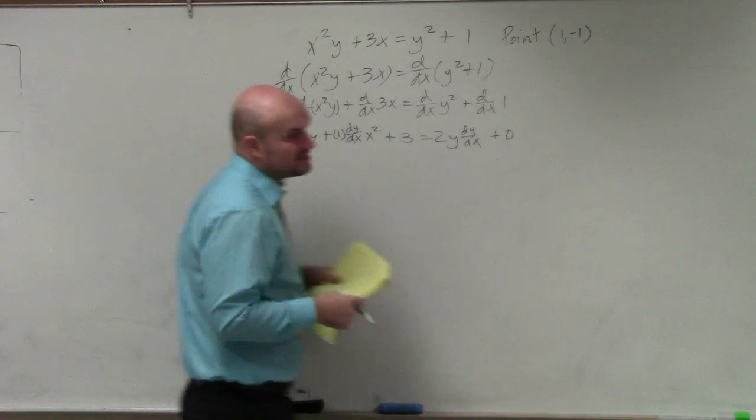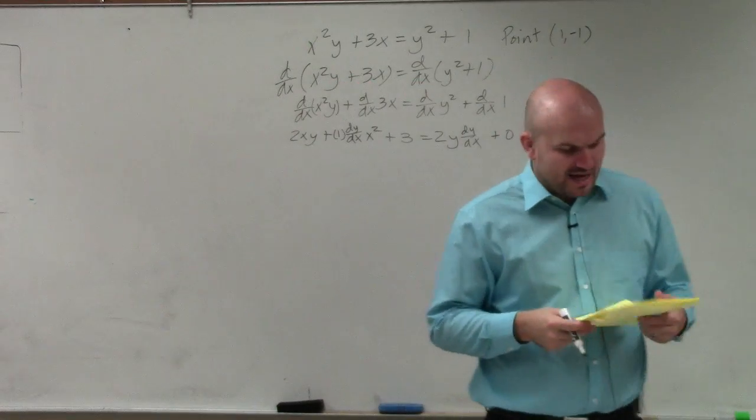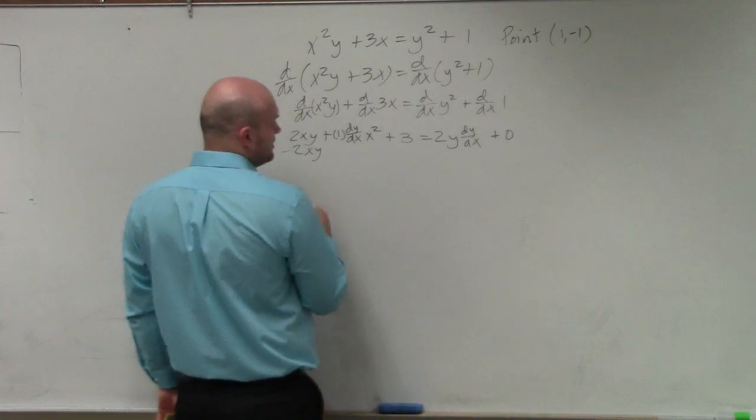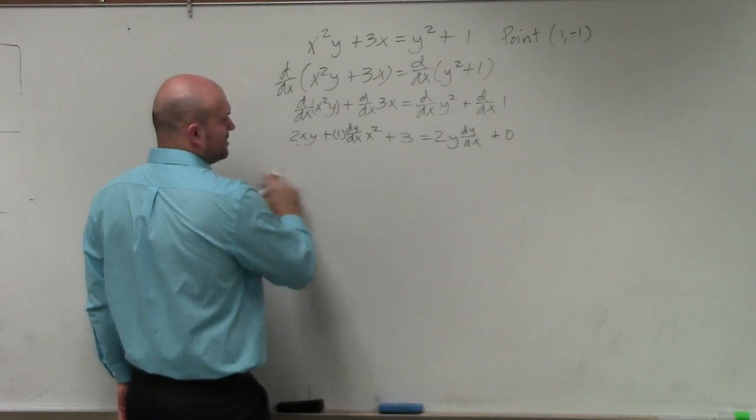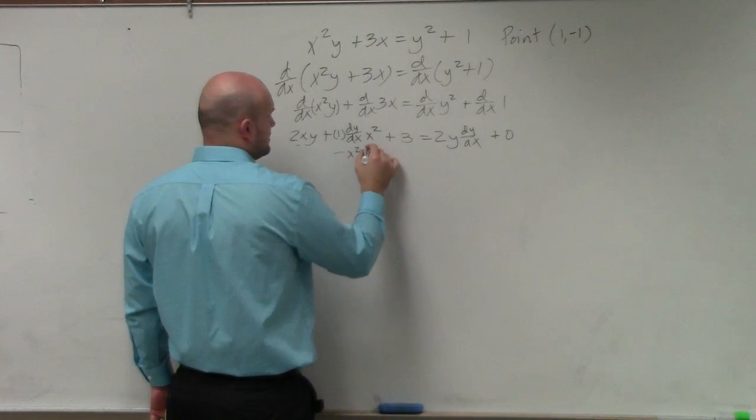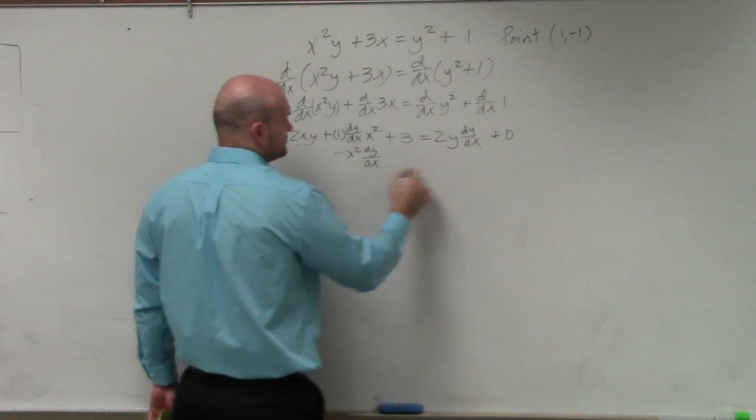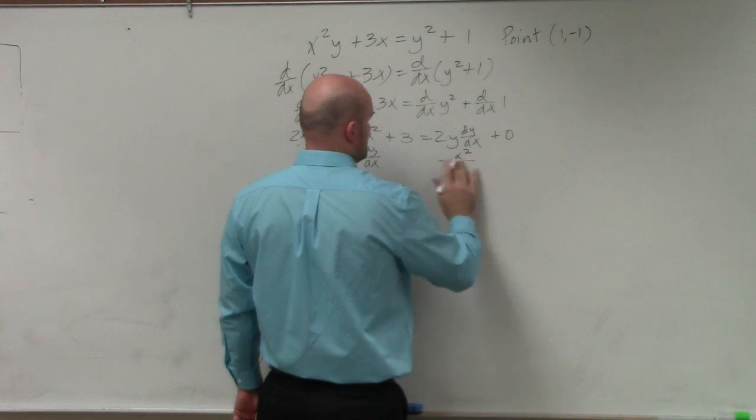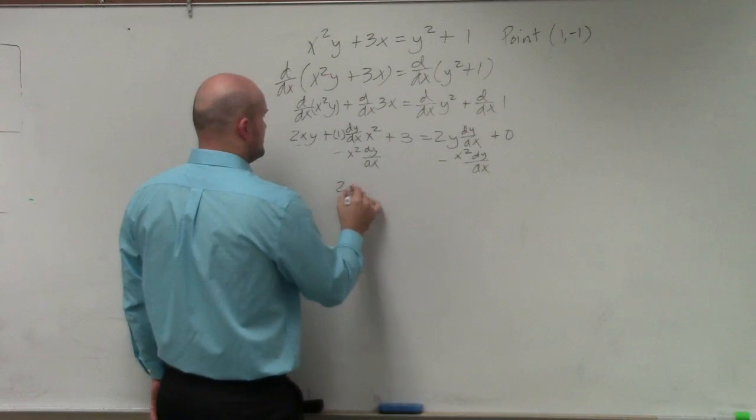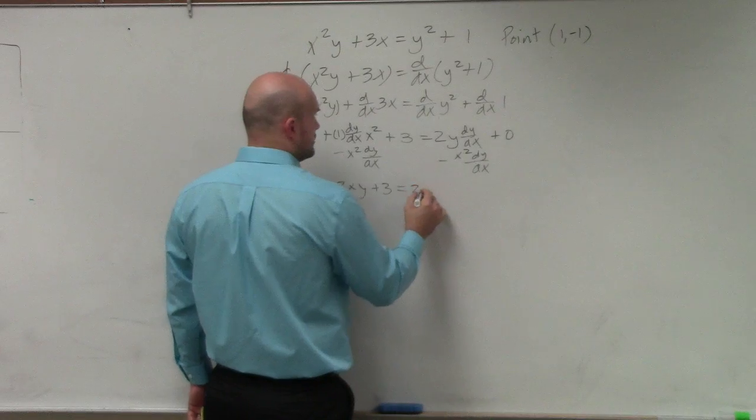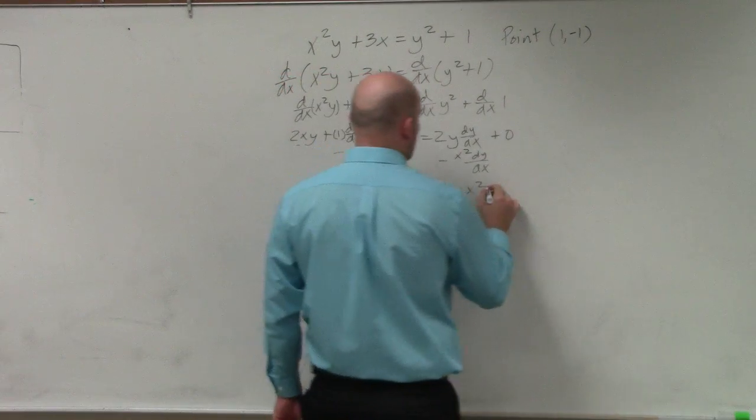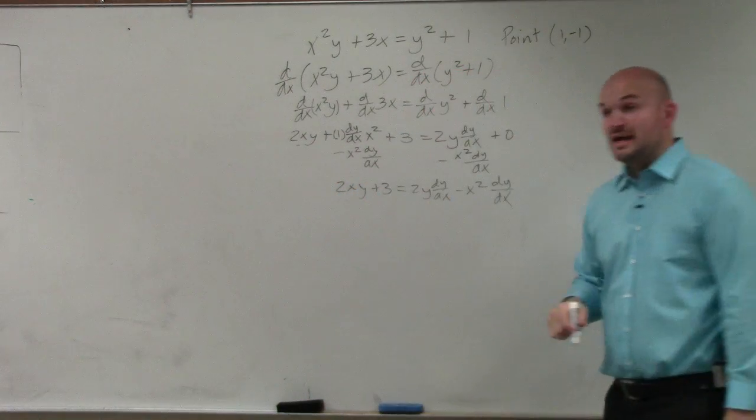So now what we need to do is collect all the dy/dx's on the same side and solve for them. I'm going to solve them on the right side. So I'm going to subtract x² dy/dx. Therefore, I have 2xy + 3 = 2y dy/dx - x² dy/dx.